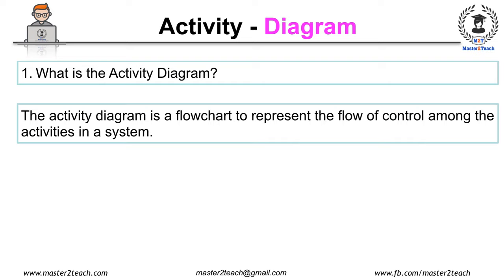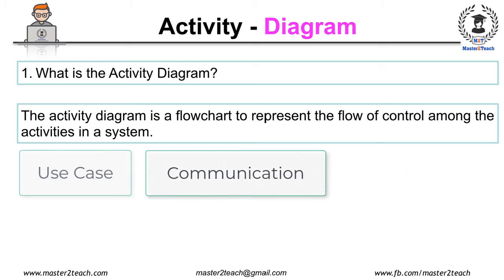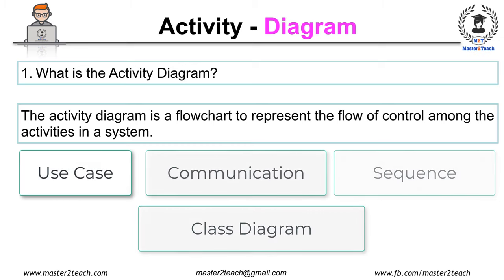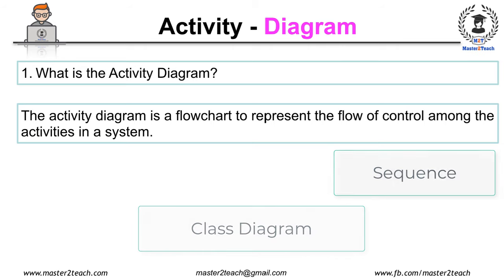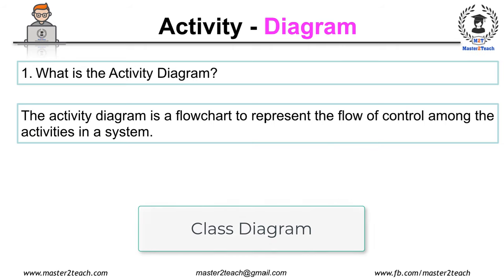So far we have gone through the use case diagram, communication, sequence, and class diagram which shows the messages flow from one object to another. But in the activity diagram it shows the message flow from one activity to another. If you haven't gone through the previous video, please find the link in the description of this video below.